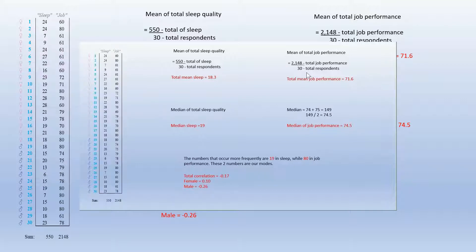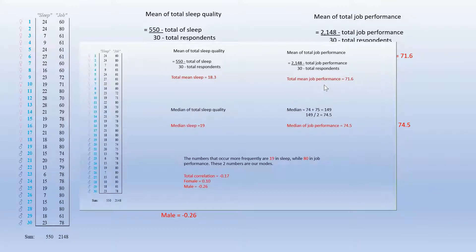Similarly, to get the mean of job performance, we divide the sum of job performance by the total respondents, which is 2148 divided by 30, and we got 71.6 as the mean of job performance.